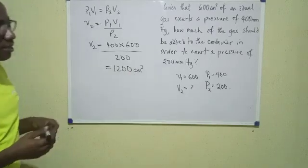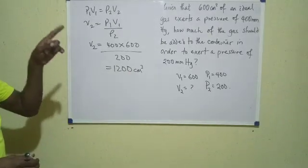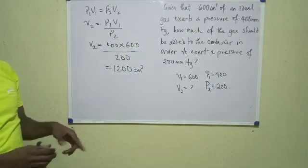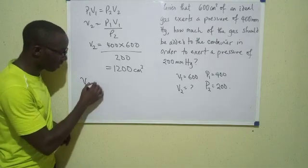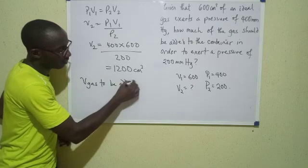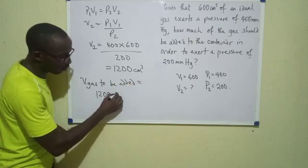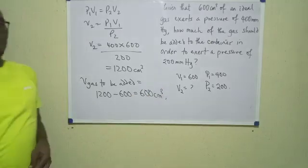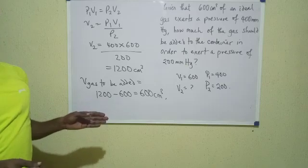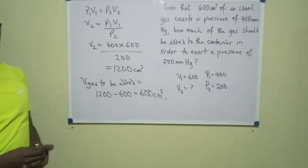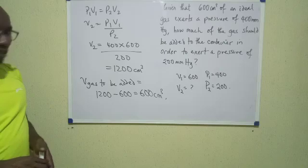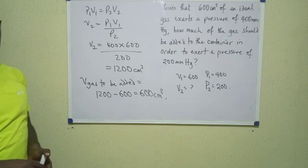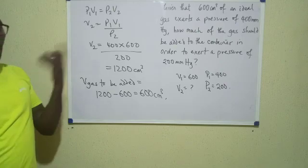But is 1,200 cm³ our final answer? No. The question asks how much gas should be added to the 600 that was already there. So the volume to be added is 1,200 minus 600, which equals 600 cm³. We must read questions carefully to avoid being misled. In our next video we'll look at Charles' Law and subsequently the other gas laws.